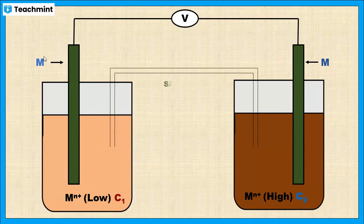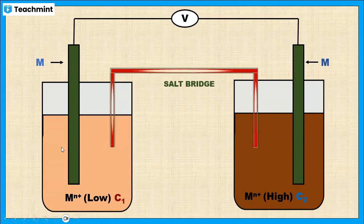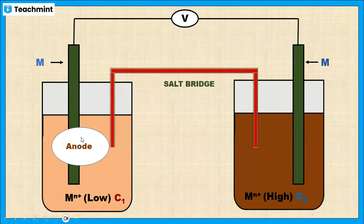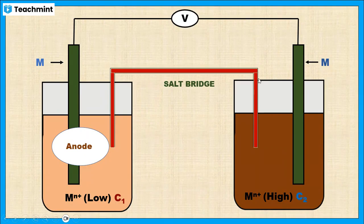The electrode with the lower concentration acts as the anode, because in the dilute solution metal dissolution will be easier. Hence, the metal rod M will dissolve in the solution by giving electrons — that is nothing but oxidation.